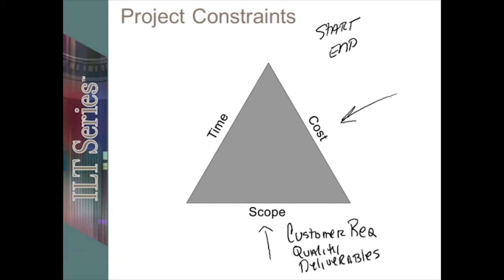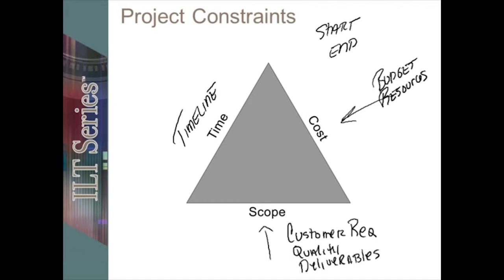We're presented with a particular budget for our resources and a finite amount of resources. We have promises to the customer and then of course we have time, and this is going to be our timeline — the timeline for tasks and all of our specific start and end dates. A project is considered successful when it's delivered on time, when it stays in budget, when the customer is happy.